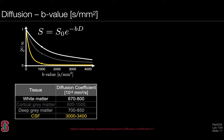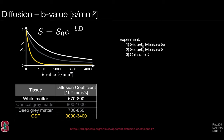Returning to the signal equation: the signal depends on a base signal S0 weighted by an exponential that depends on the B-value and the underlying diffusion coefficient. We can map different exponential decay curves for white matter, gray matter, and CSF. To measure or estimate the diffusion coefficient, two experiments are required: first, set B=0 to measure the S0 or non-diffusion-weighted image (the B0 image); second, set B to a non-zero value to acquire the diffusion-weighted signal. From these, the diffusion coefficient can be calculated on a pixel-by-pixel basis.